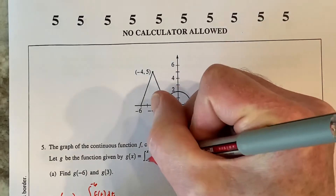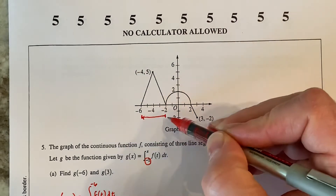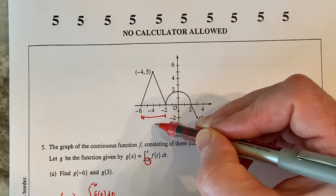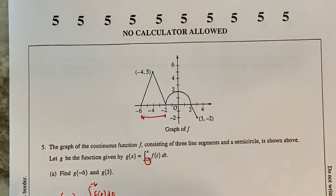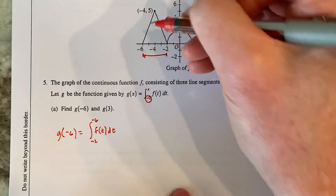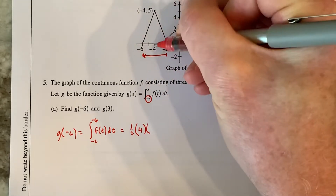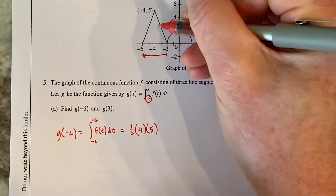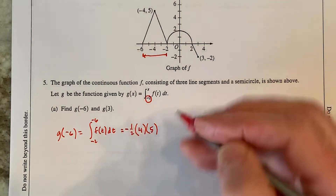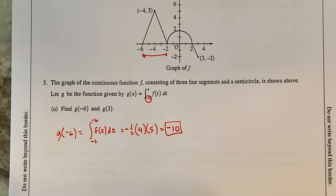When accumulating area to the left, area above the x-axis is negative. Going from negative 2 to negative 6 is heading left, so area above is negative. The area is a triangle: one half times base 4 times height 5. One half of 20 is 10, but because it's above going left, I negate it. G of negative 6 equals negative 10. You get a point for that.